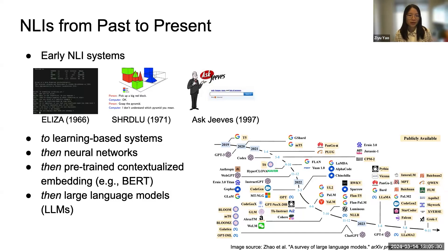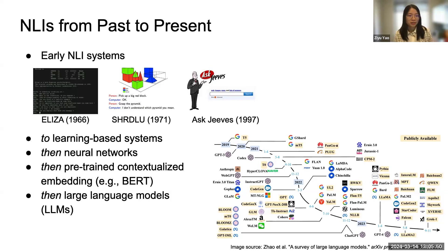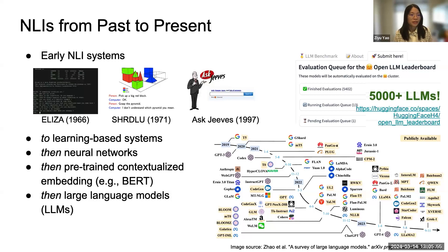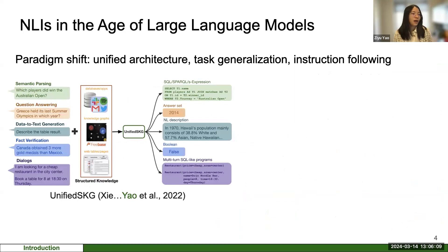Now we have more and more focus on the use of large language models, or LLMs. This figure I've been using in recent talks shows how different language models have evolved from early 2019 to nowadays. It's very exciting to see more language models getting publicly available — we now have more than five thousand LLMs based on numbers released on the Hugging Face open LM leaderboard.